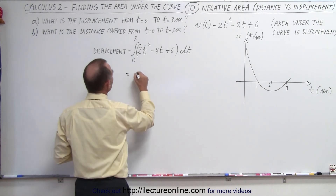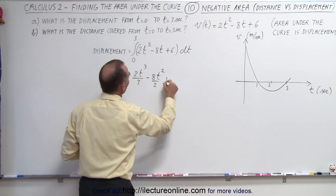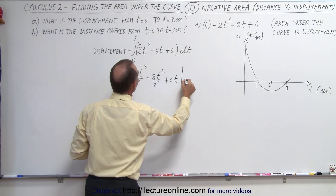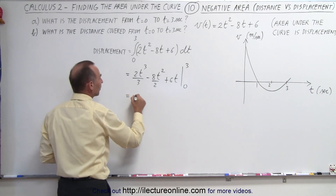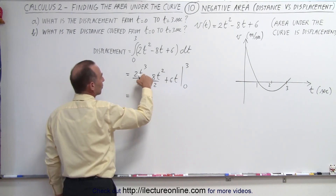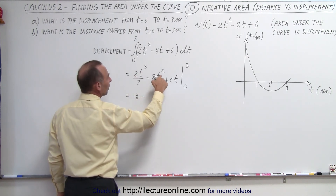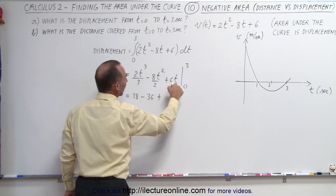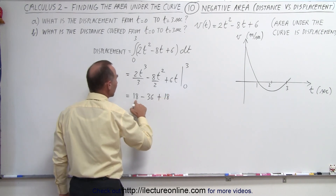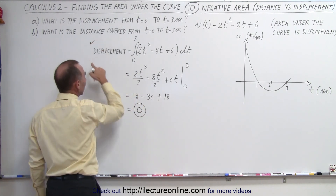The integral becomes 2t³/3 - 8t²/2 + 6t, evaluated from 0 to 3. When we plug in 0 we get nothing, so we only worry about the upper limit. We get: (2/3)(27) = 18, minus (4)(9) = 36, plus (6)(3) = 18. So 18 - 36 + 18 = 0, which means the displacement is equal to 0.